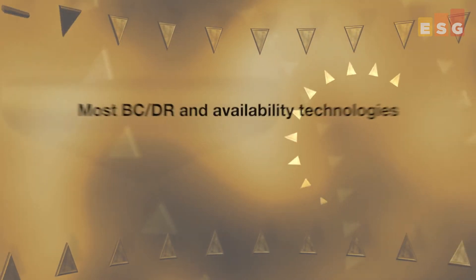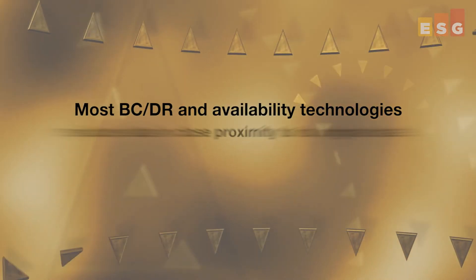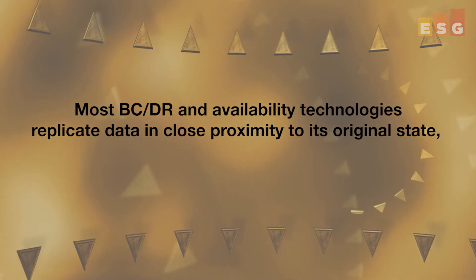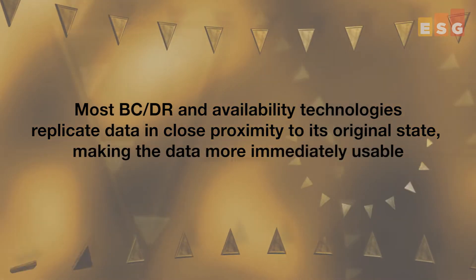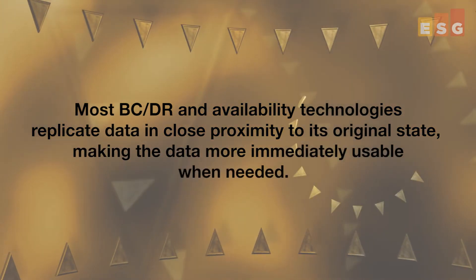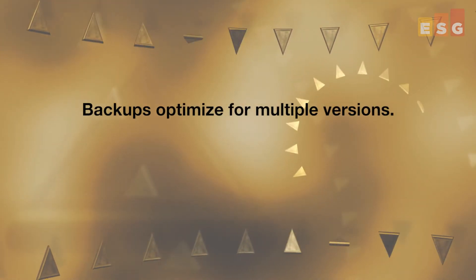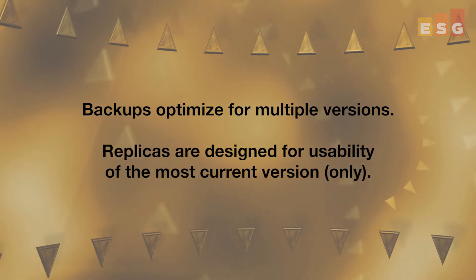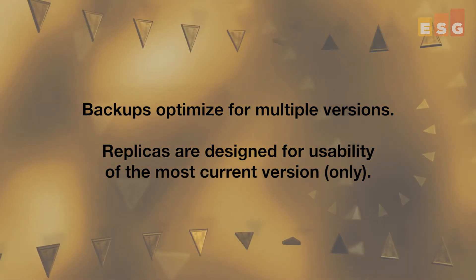In contrast to that, most BCDR and availability technologies replicate the data in closer to their original state, which makes the data more immediately usable when needed. One method is not better than the other. Backups optimize for multiple versions, while replicas are designed for usability of typically only the most current version.